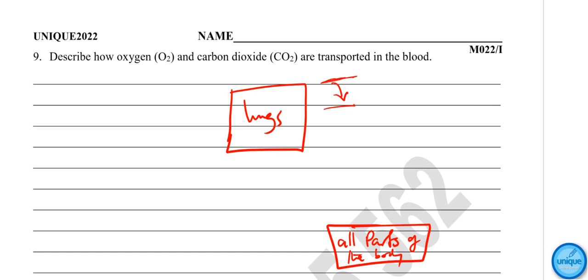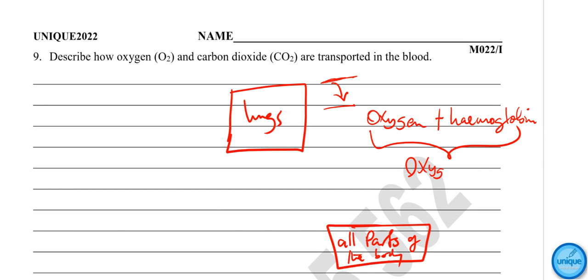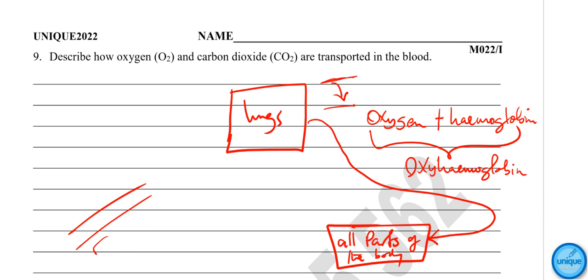In the lungs, oxygen diffuses from the air into the blood capillaries. There it combines with a protein found on the surface of red blood cells called hemoglobin. Oxygen and hemoglobin combine to form a compound called oxyhemoglobin.